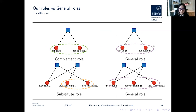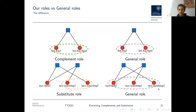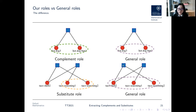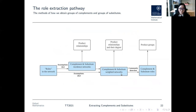Generally, roles are defined as nodes with similar connectivity patterns, but our assumptions restrict the specific connectivity pattern of our roles, which makes general extraction methods not applicable here. The complement role could coincide with the general one, but for the substitute role, applying a general extraction method would include not only substitutes but also their complements — which is not desired. So we propose a customised role extraction method. What our specific roles look like is characterised by these four assumptions.